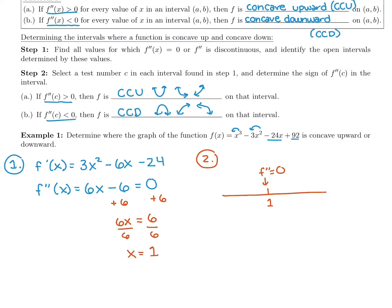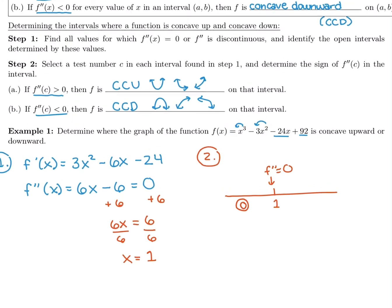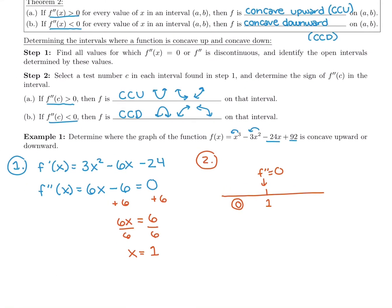I need to pick a number to test to the left of 1. I'll test x = 0: plugging into the second derivative gives 6(0) - 6 = -6, which is negative. So the graph must be concave down to the left of 1. After x = 1, I'll plug in x = 10: 6(10) - 6 = 60 - 6 = 54, which is positive. So the graph switches from concave down to concave up at x = 1.